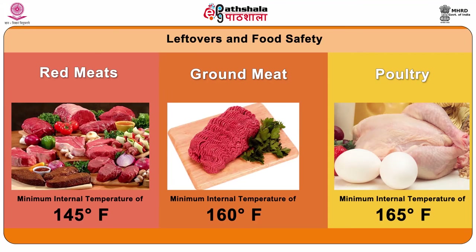In the case of ground meats, raw ground beef, pork, lamb and veal should be cooked to an internal temperature of 160 degrees Fahrenheit.